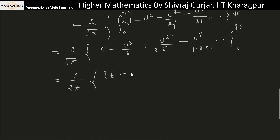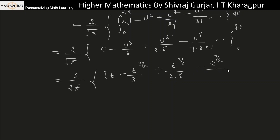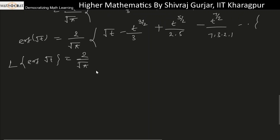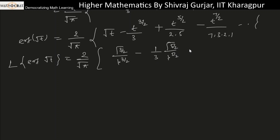Substituting the limits gives two by root pi times: t to the power three over two divided by three, plus t to the power five over two divided by two factorial times five, minus t to the power seven over two divided by three factorial times seven, and so on. Taking the Laplace transform term by term and using gamma function identities, we note that gamma of three over two equals one half times gamma of one half.